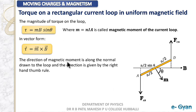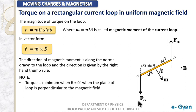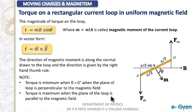The direction of the magnetic moment m is along the normal drawn to the loop, and its direction is given by the right-hand thumb rule — by observing the current direction we can determine the direction of the magnetic moment. It is always normal to the current loop. Torque is minimum (zero) when θ = 0°, and torque is maximum when θ = 90°, that is, when the plane of the loop is parallel to the magnetic field.